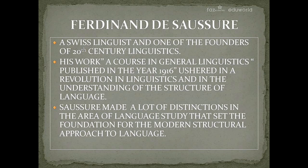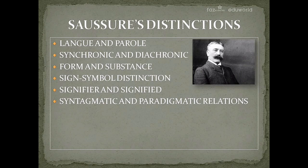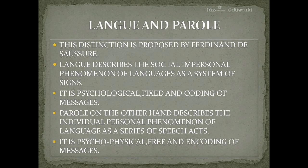Saussure's distinctions include: langue and parole, synchronic and diachronic, form and substance, sign-symbol distinction, signifier and signified, and syntagmatic and paradigmatic relations. The first distinction is langue and parole. Langue describes the social, impersonal phenomenon of language as a system of signs — it is psychological, fixed, and encoding of messages. Parole, on the other hand, describes the individual, personal phenomenon of language as a series of speech acts — it is psychophysical, free, and decoding of messages.